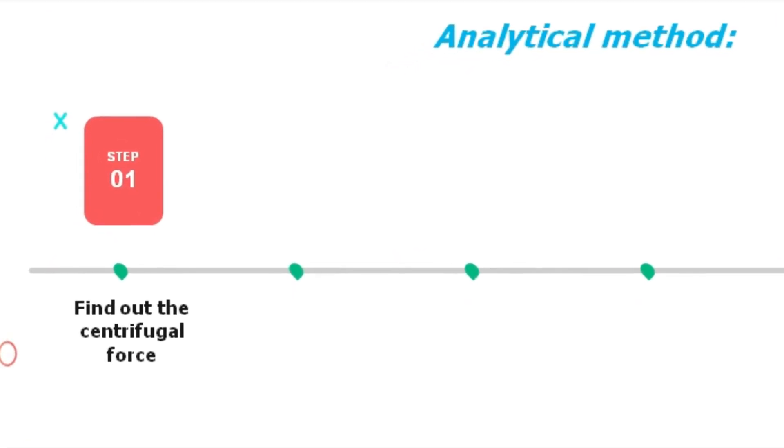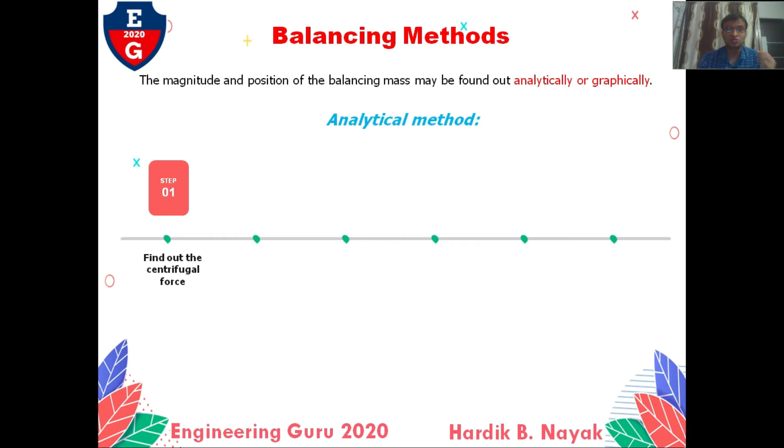So, first step: find out the centrifugal force. In this figure, we already see that we have four masses, so firstly we have to find Fc1, Fc2, Fc3, Fc4. Now, how can we find centrifugal force?